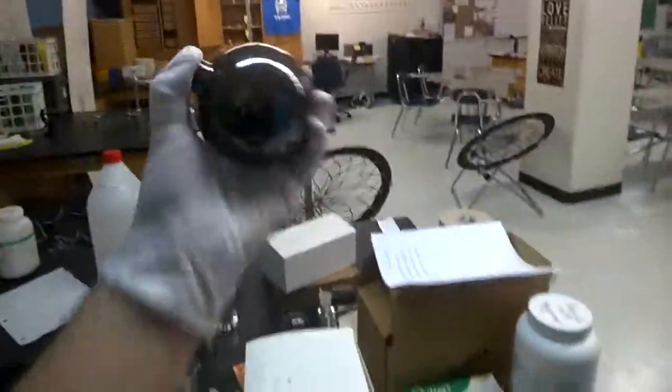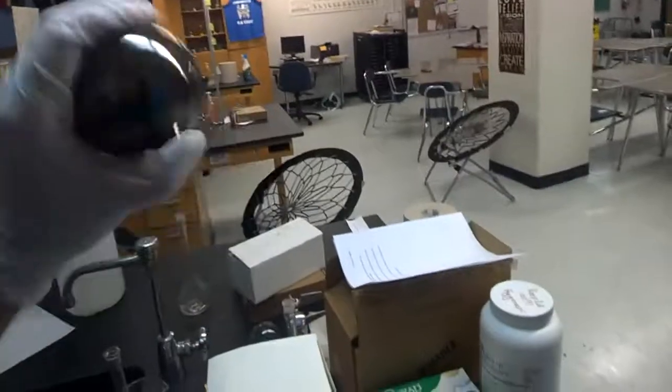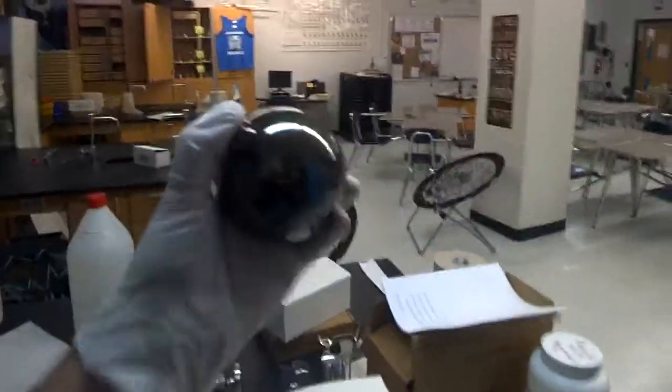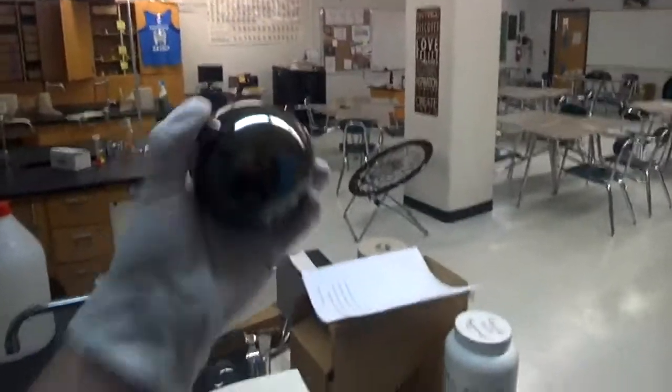You'll notice that the container is getting darker and darker as we go. And you want to make sure you keep your thumb on there really good. Because sometimes a little bit can come out. Now this is silver that's in here. So you know silver nitrate will stain the skin. So you want to make sure you are careful at all times.